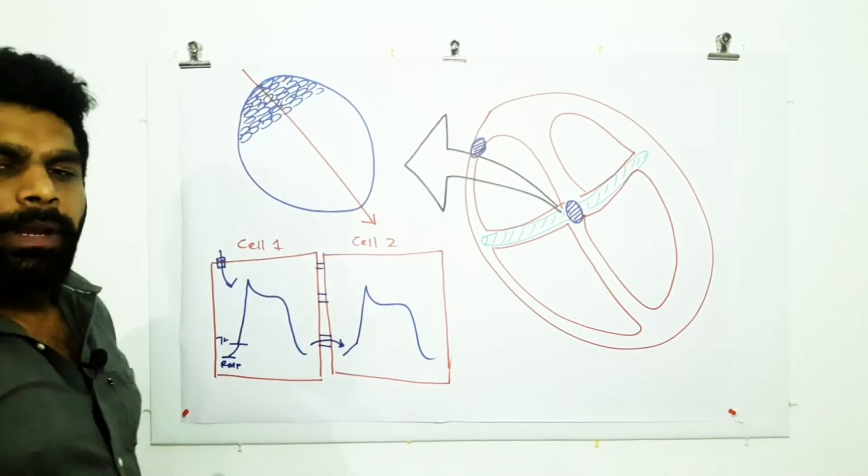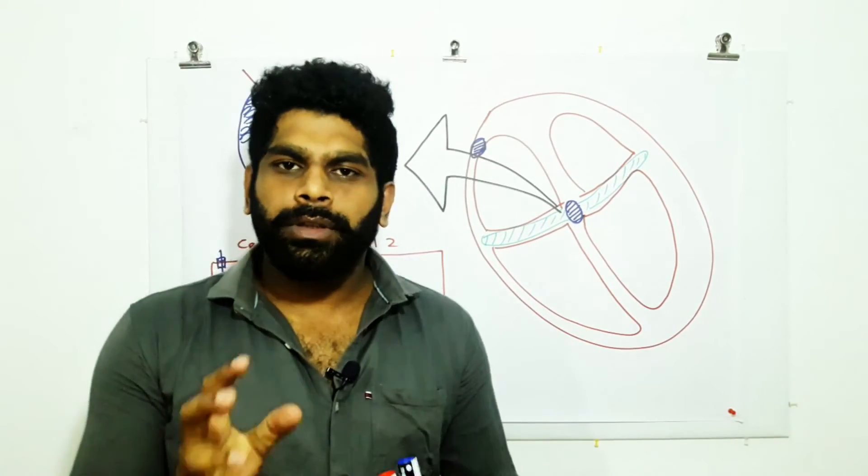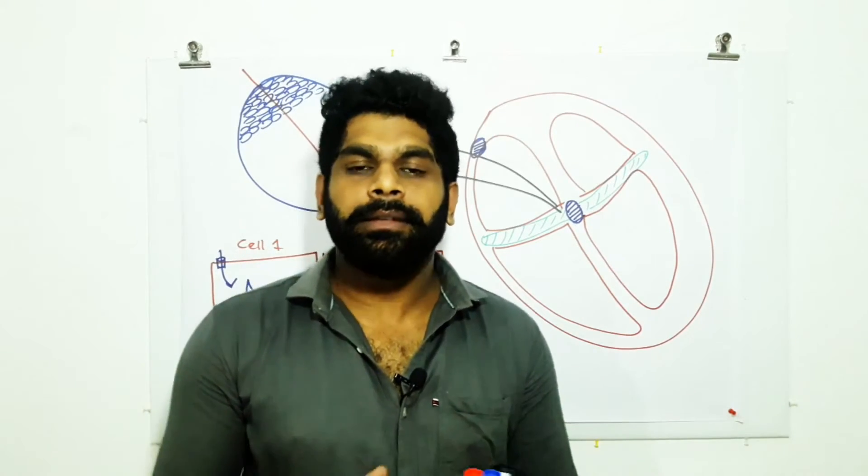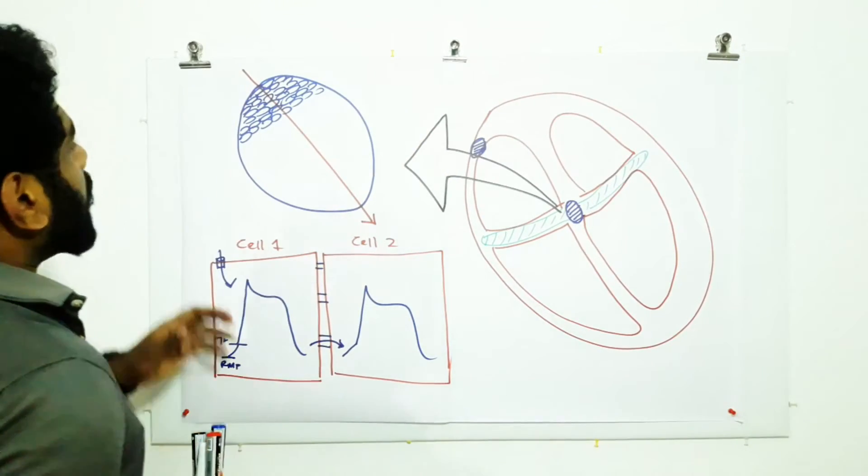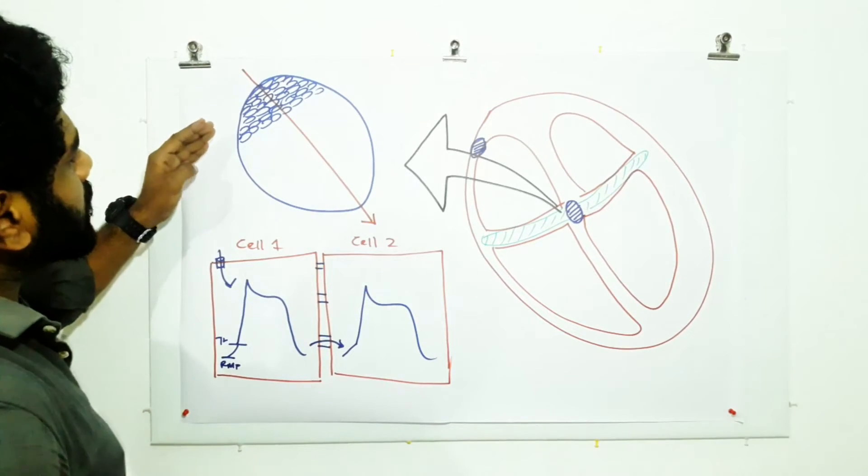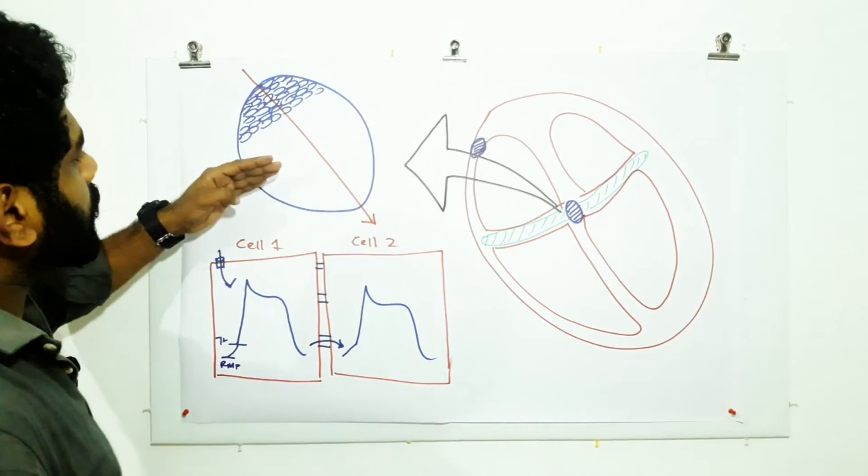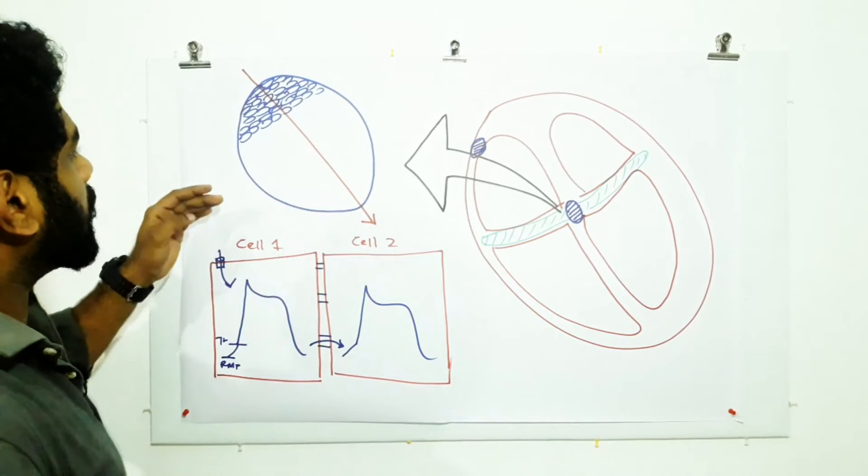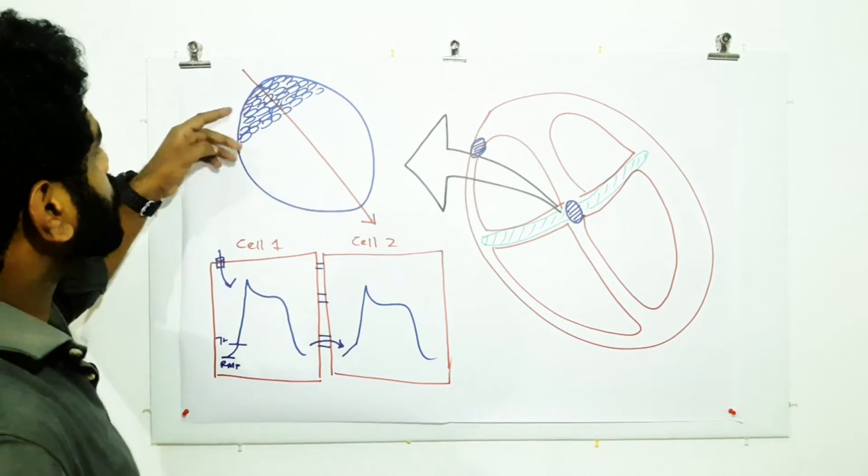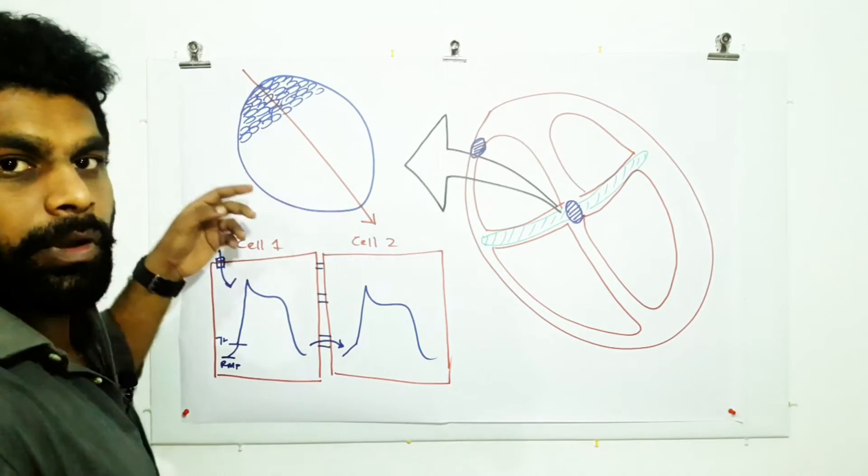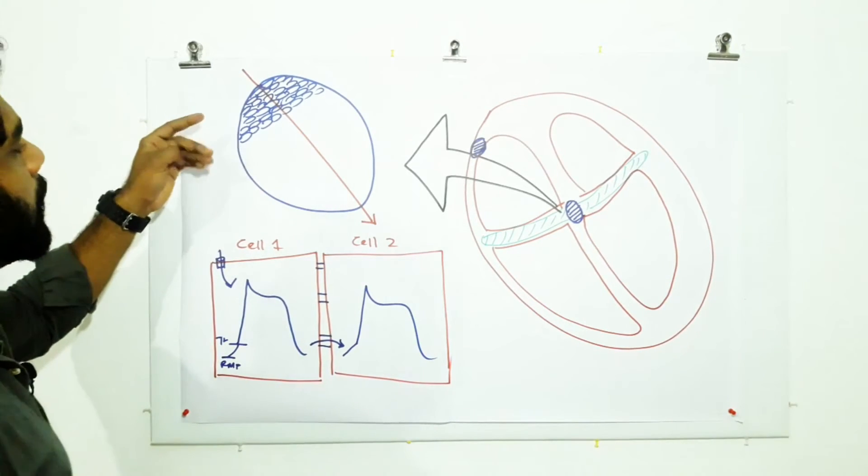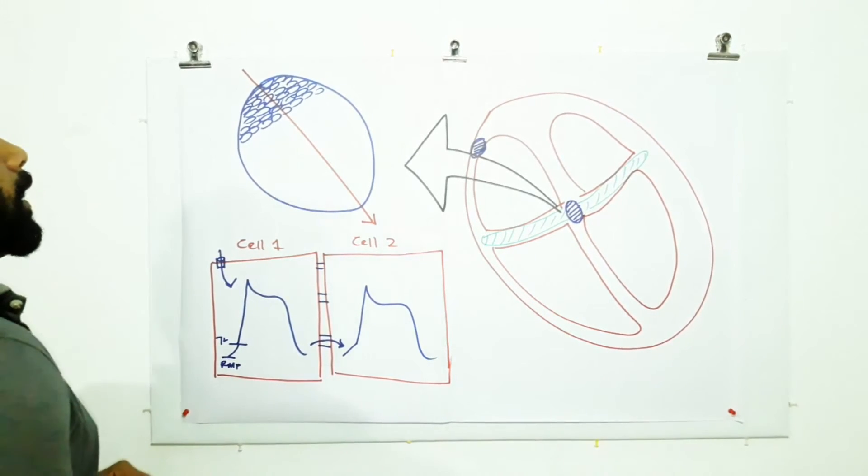Lesser the diameter, higher the resistance. So AV node gives high resistance to the electrical impulse and there are more number of cells. These cells are arranged at right angle to the direction of the current, so the current has to pass through more number of membranes and these membranes have less number of gap junctions.